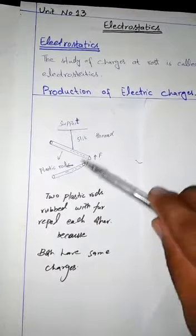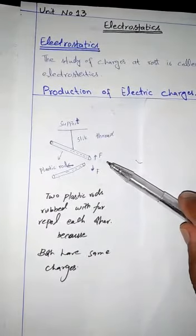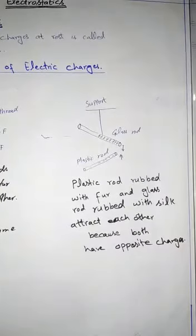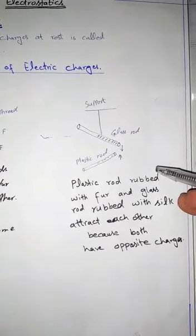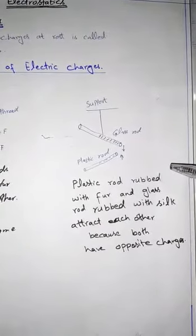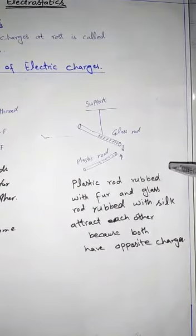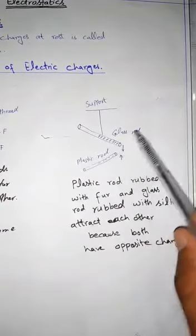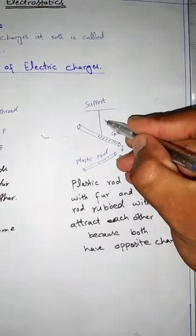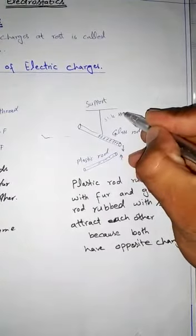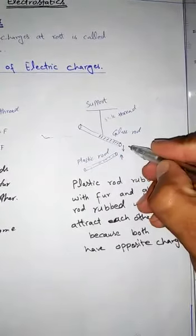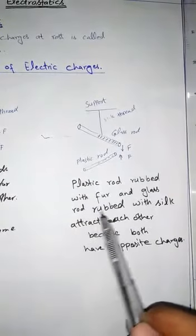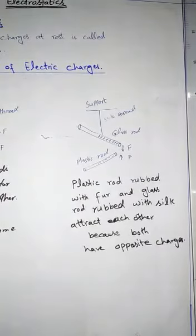Now take a glass rod and rub it with silk, then suspend it horizontally. When we bring the plastic rod rubbed with fur near the suspended glass rod, we observe that both rods attract each other. Here one is a plastic rod and one is a glass rod.